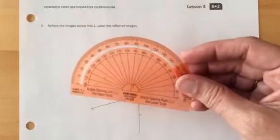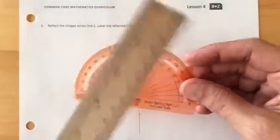For this exercise you're going to need a protractor and a ruler. What we're going to be doing is reflecting these images and then measuring them after we reflect them.